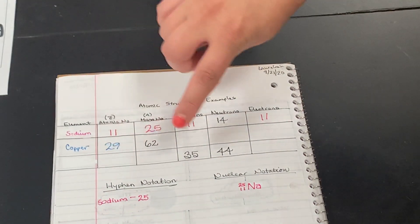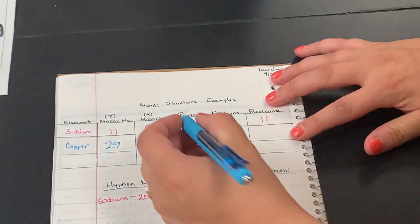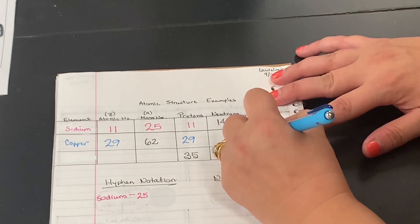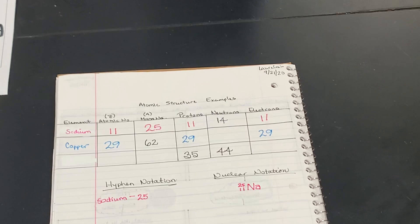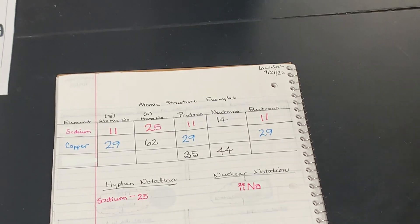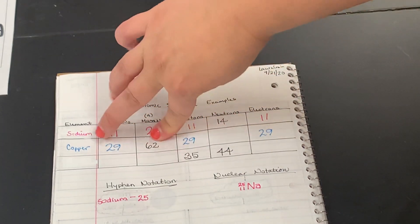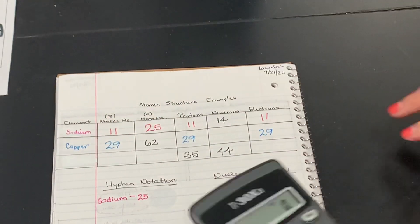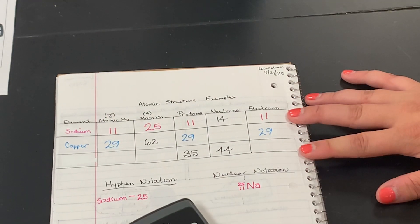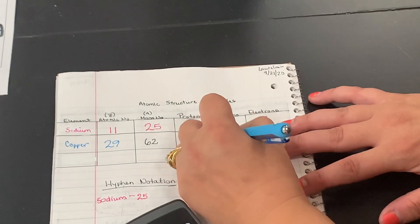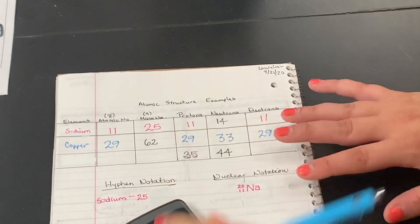So they gave us our mass number. Remember, atomic number, protons, and electrons should all be the same. So we have 29 protons and 29 electrons. So then to figure out the number of neutrons, we are going to take our mass number and subtract the atomic number. So I'm going to do 62 minus 29. That's going to give me 33 neutrons.